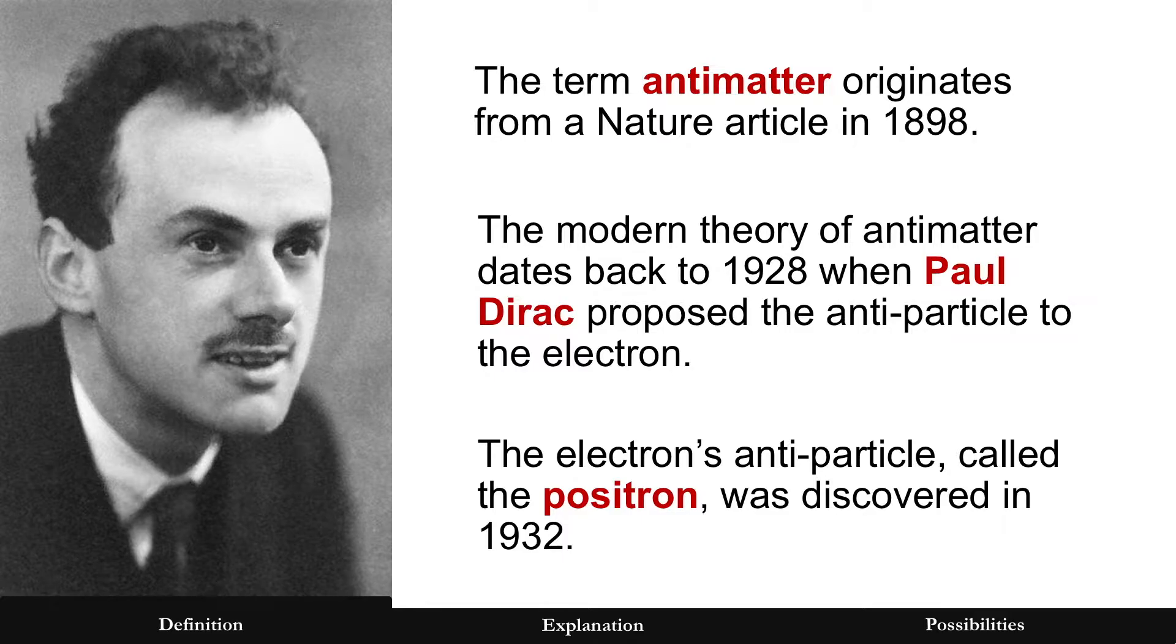Now the term itself originates back to 1898, but really the modern theory of antimatter started in 1928 when Paul Dirac proposed the antiparticle to the electron. It's called the positron, and it was discovered in 1932.